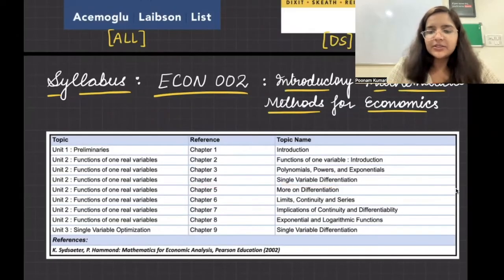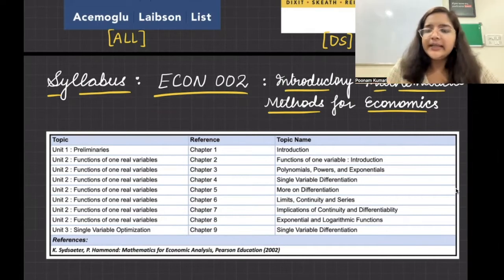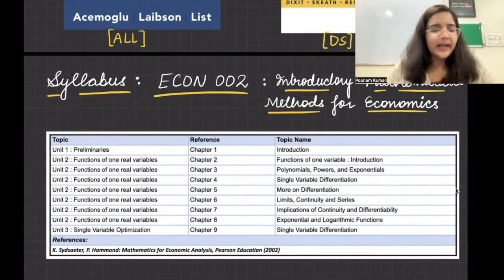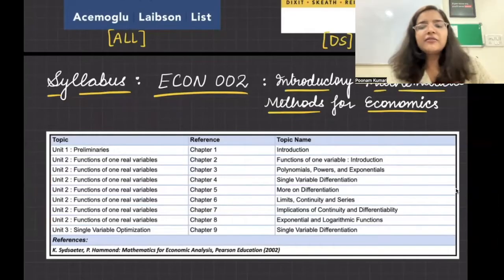Then from chapter number four onwards, we will start to talk about differentiation. So single variable differentiation and differentiation related topics, what does differentiation mean, what is the meaning of limit, what is the definition of continuity, different things, when does a series converge, series diverge, all these topics we are going to do. So continuity, differentiability, limits, this is going to be a major chunk. And the thing that most people dread, which is also difficult, that starts from this particular chapter, chapter four onwards.